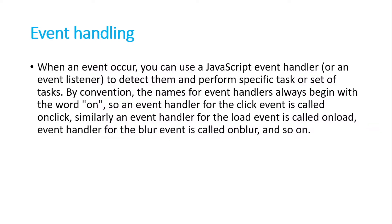When an event occurs, you can use a JavaScript event handler or an event listener to detect it and perform specific tasks. By convention, the names for event handlers always begin with the word 'on'. So it can be 'onclick', 'onchange', or anything. An event handler for the click event is called 'onclick', for the load event it is called 'onload', for the blur event it is called 'onblur', and so on.